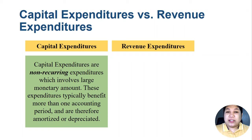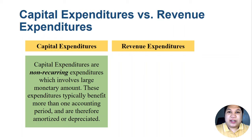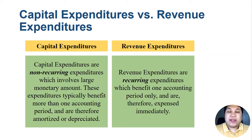There are salient characteristics of a capital expenditure. First, they are non-recurring — they don't always occur or may happen only once in a year, two years, or a decade. Second, they usually involve large amounts of money. Third, they benefit not only one period but two or more accounting periods.